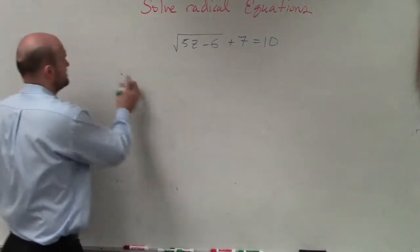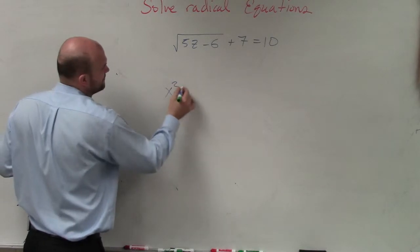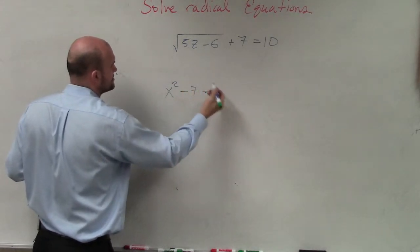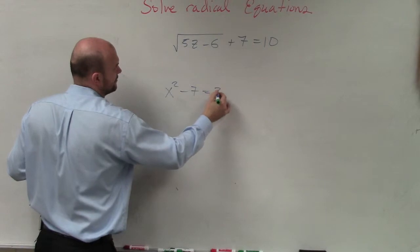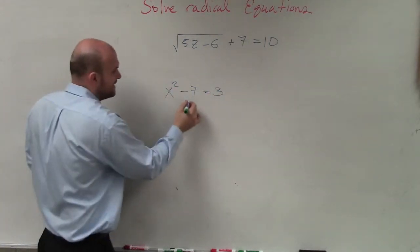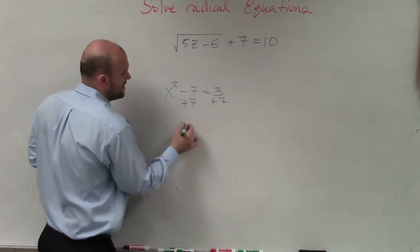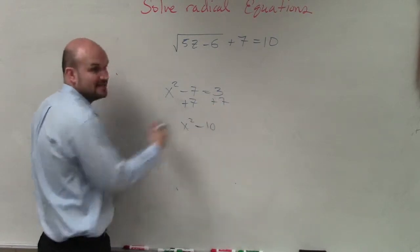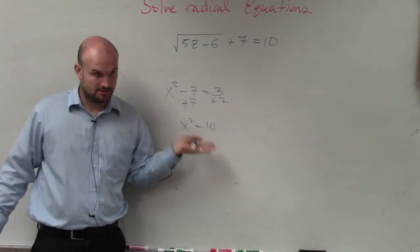In the same respect, just like when we were solving quadratics, if you guys remember, like if I had x squared minus 7 equals 3 or something like that, we don't square root things until we add the 7 to both sides. Then we have x squared equals 10. Now we take the square root, right? Do you guys remember that?